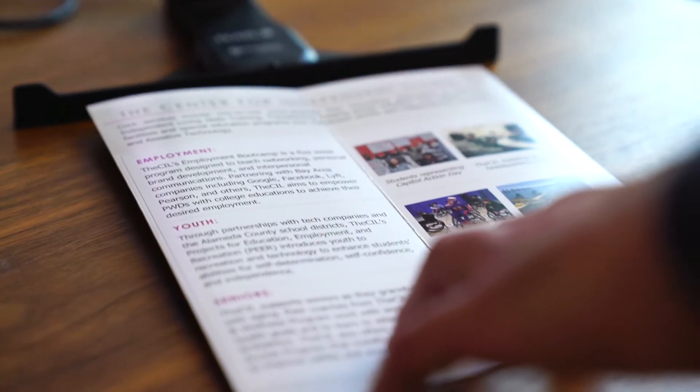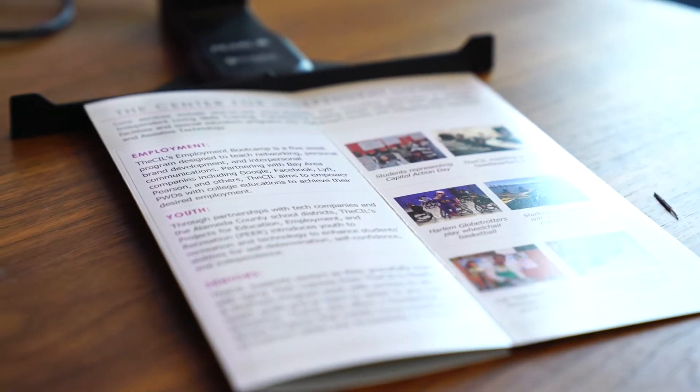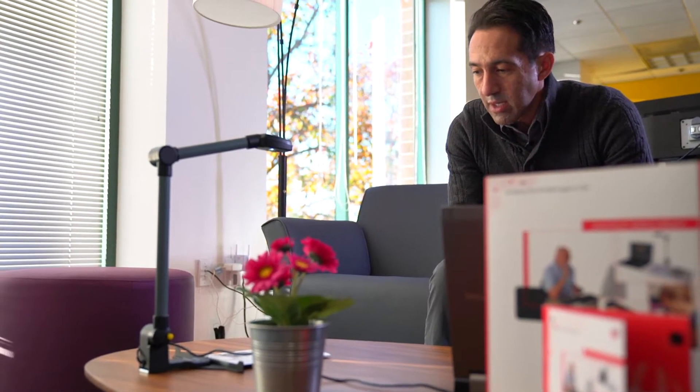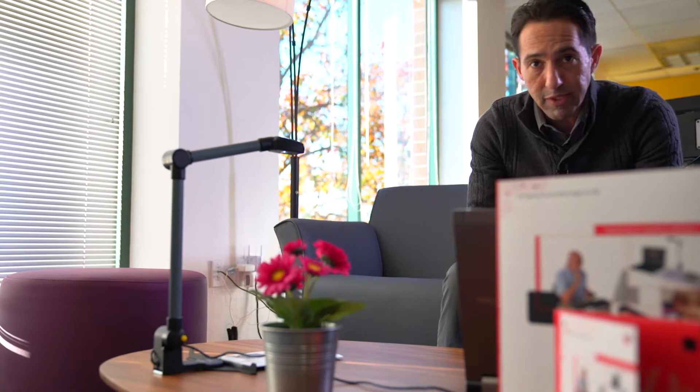Alright, so here we go. We have the Open Book software all ready to go on the computer. The computer's set up, our camera's set up. And I'm just going to put in our first document, which is our CIL brochure or pamphlet, some information about the CIL. I'll place it right under the camera right there. And then I'll press the space bar to get the snapshot. And we'll hear what Open Book does with this first document.